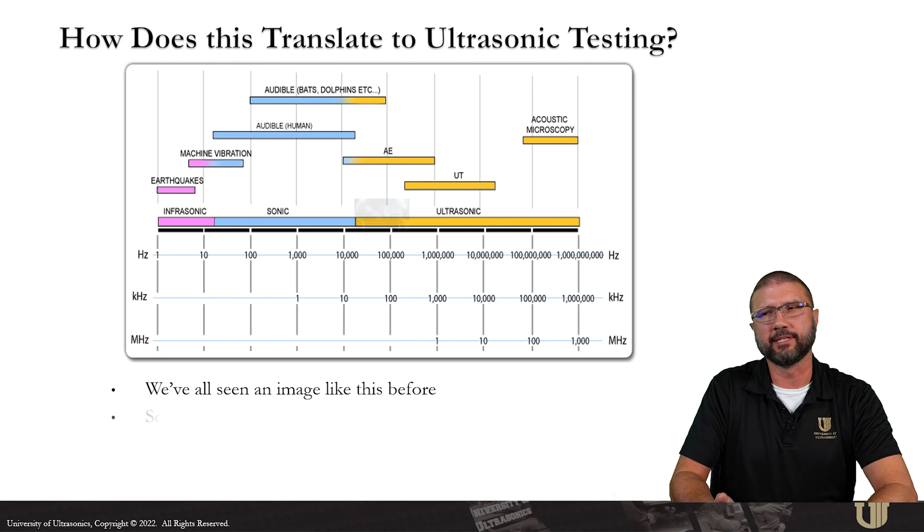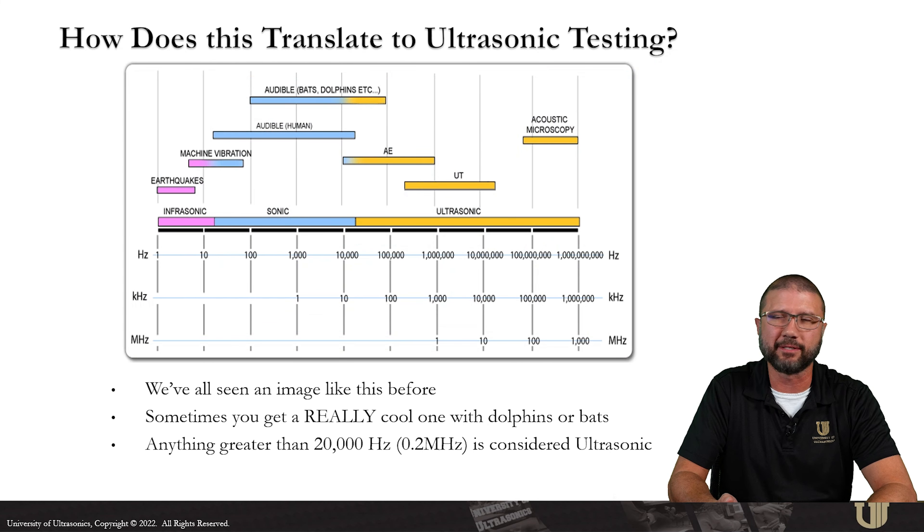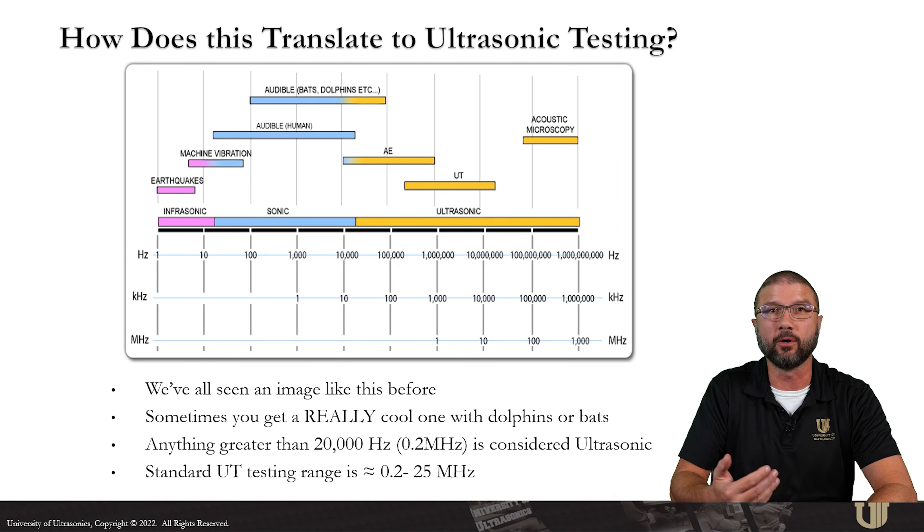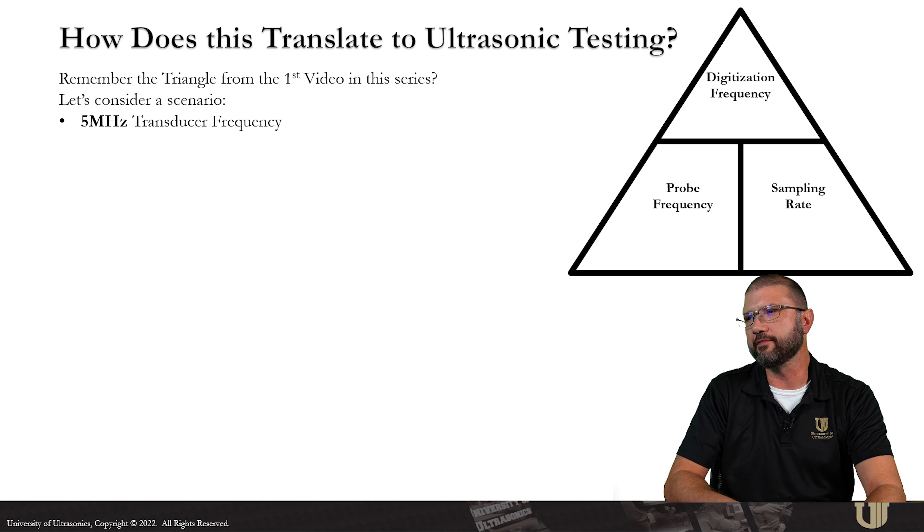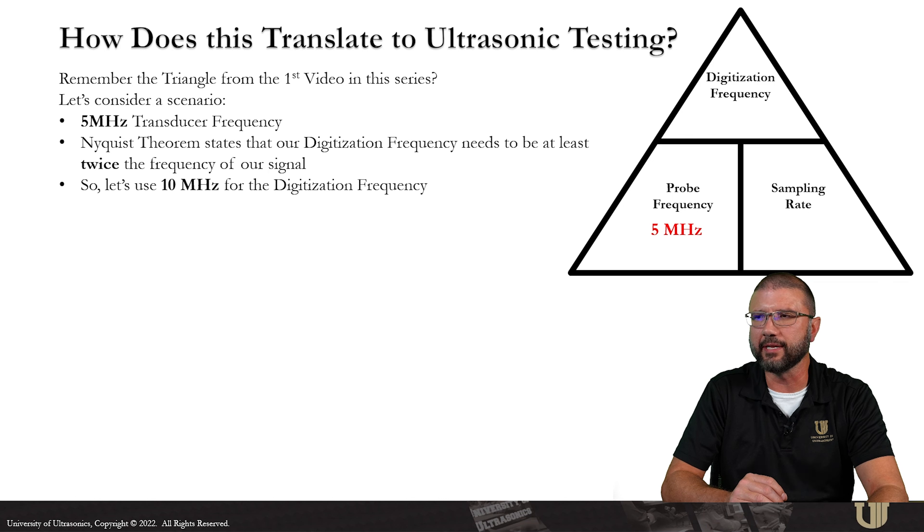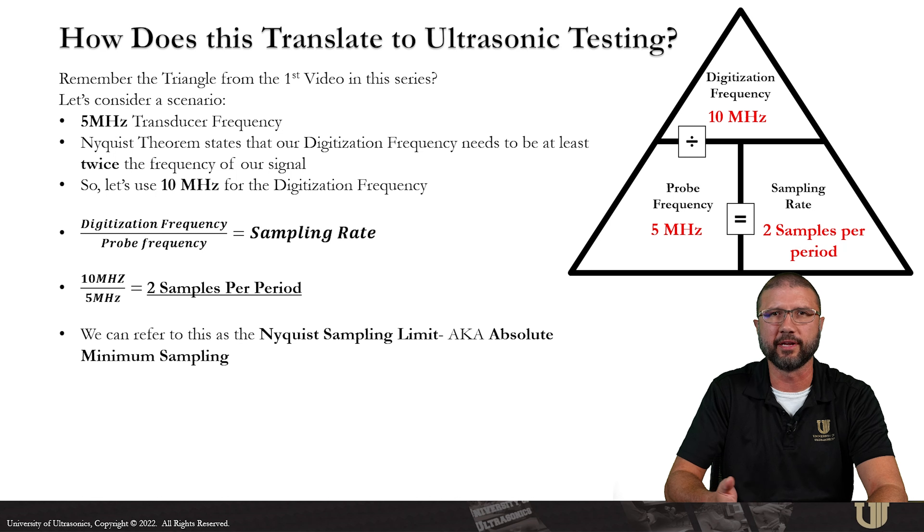How can we translate that to UT testing? That's the big question here. So we've all seen an image like this before. We like to talk about dolphins and bats. Anything greater than 20,000 Hertz is considered to be ultrasonic or just outside of the human hearing range. Standard UT testing is about 0.2 to 25 megahertz. Remember the triangle from the first video of the series and let's consider a scenario. We're going to use a 5 megahertz transducer frequency. Nyquist theorem states that our digitization frequency needs to be at least twice the frequency of our signal. So let's use 10 megahertz for that. 10 megahertz divided by 5 megahertz is going to tell us that we have two samples per period in that scenario. And we can refer to this as the Nyquist sampling limit, aka absolute minimum sampling, two samples per period.